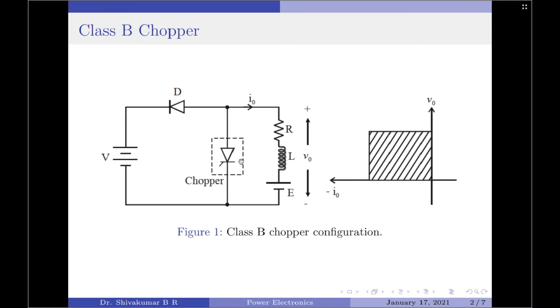Also, since the load voltage is positive but the load current is negative, a class B chopper produces the second quadrant operation as shown in figure 1B here.